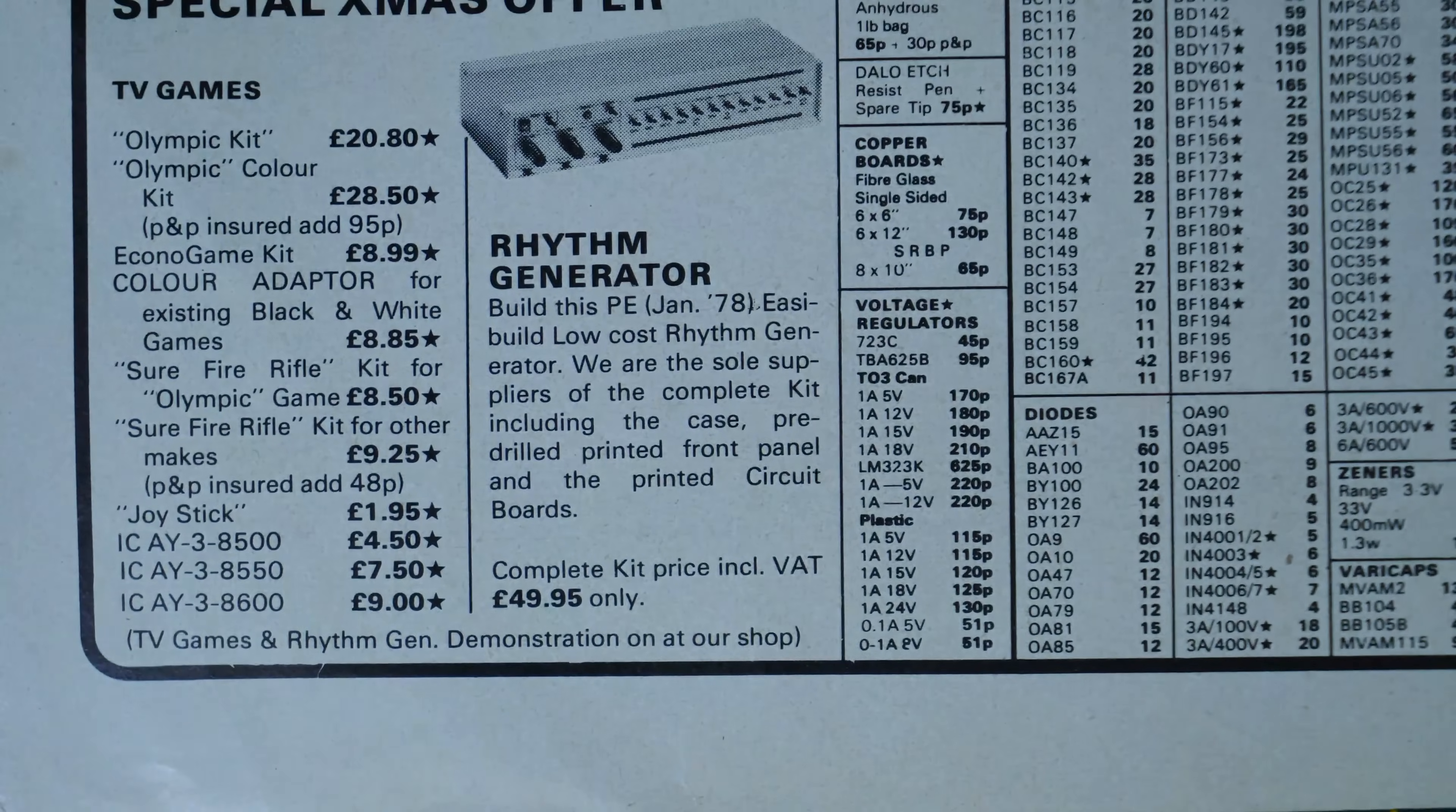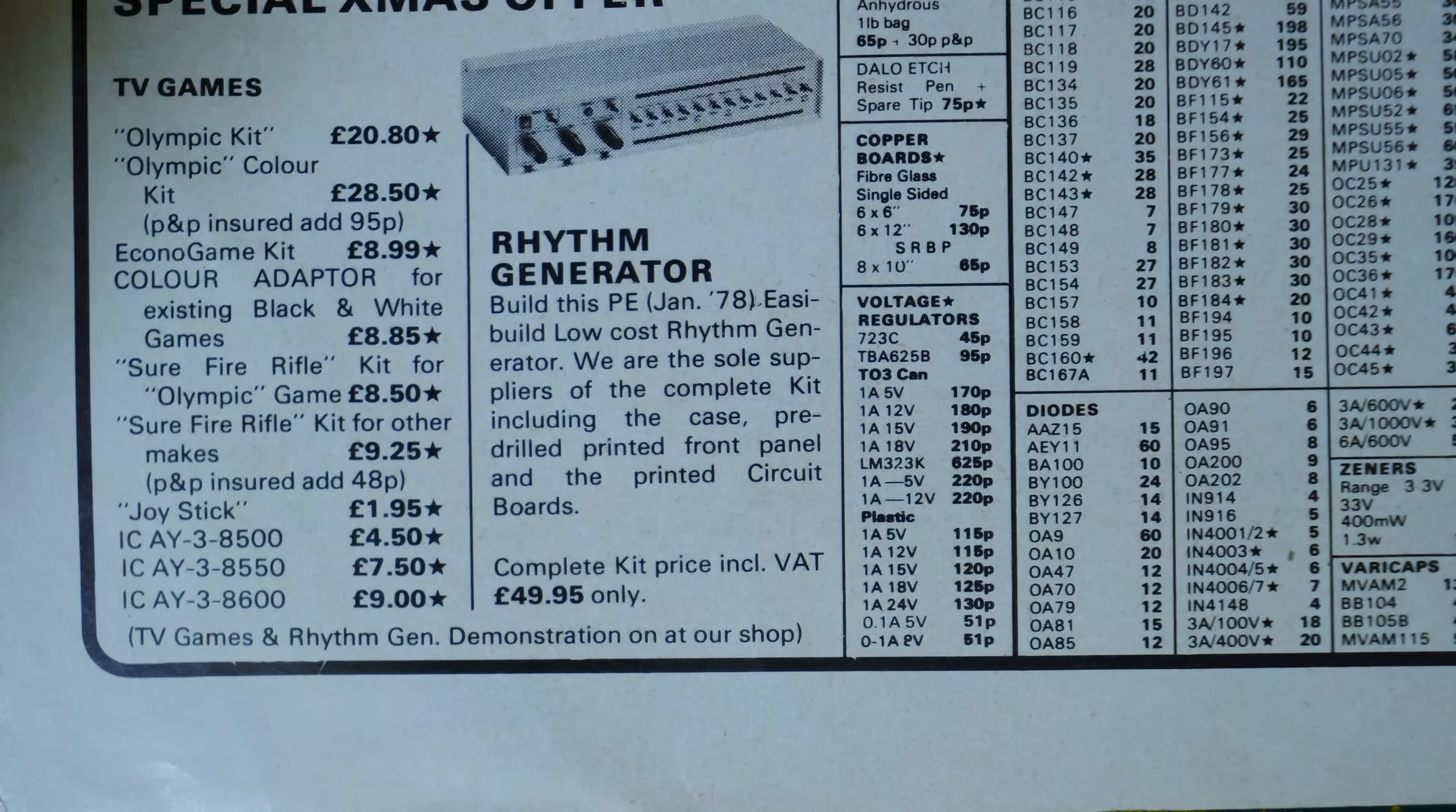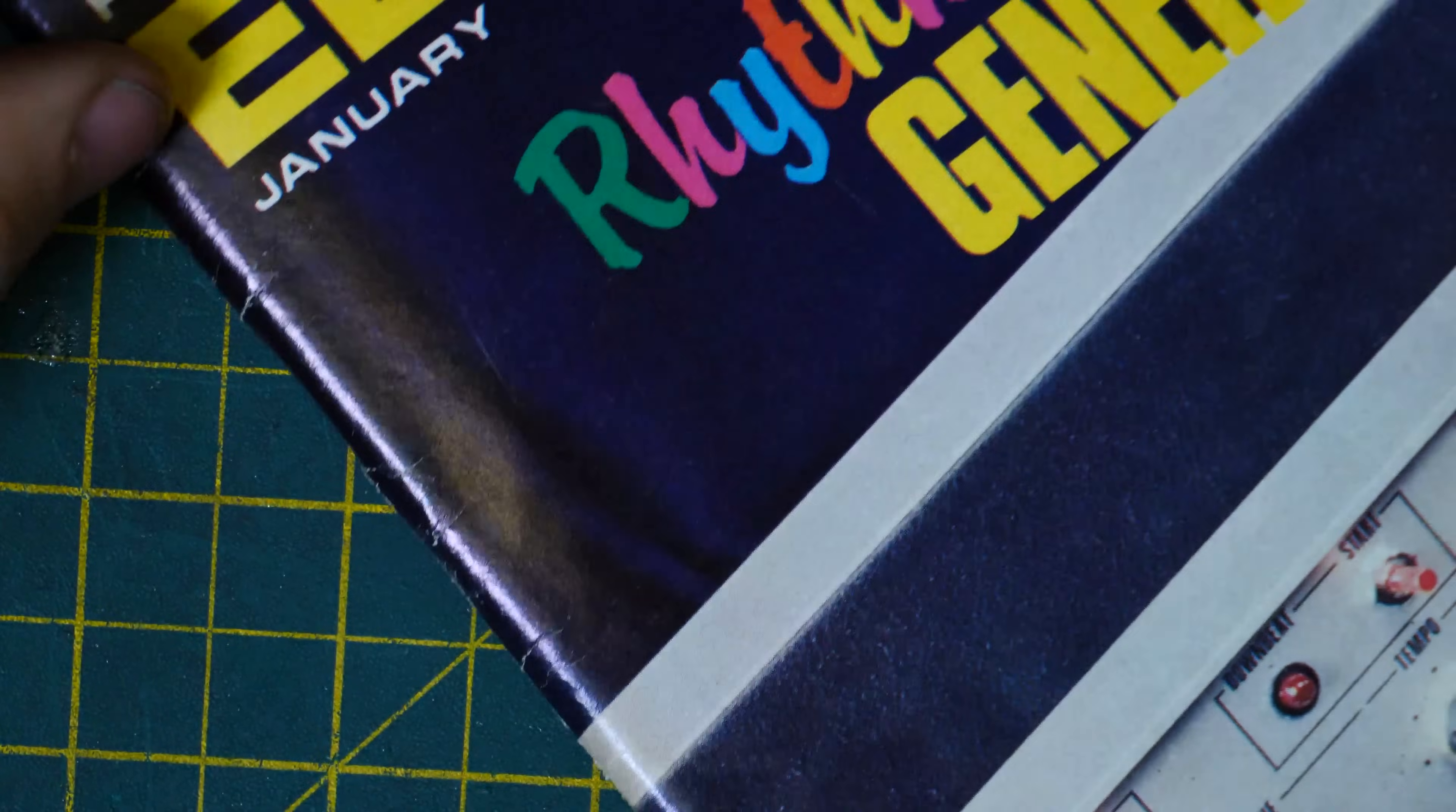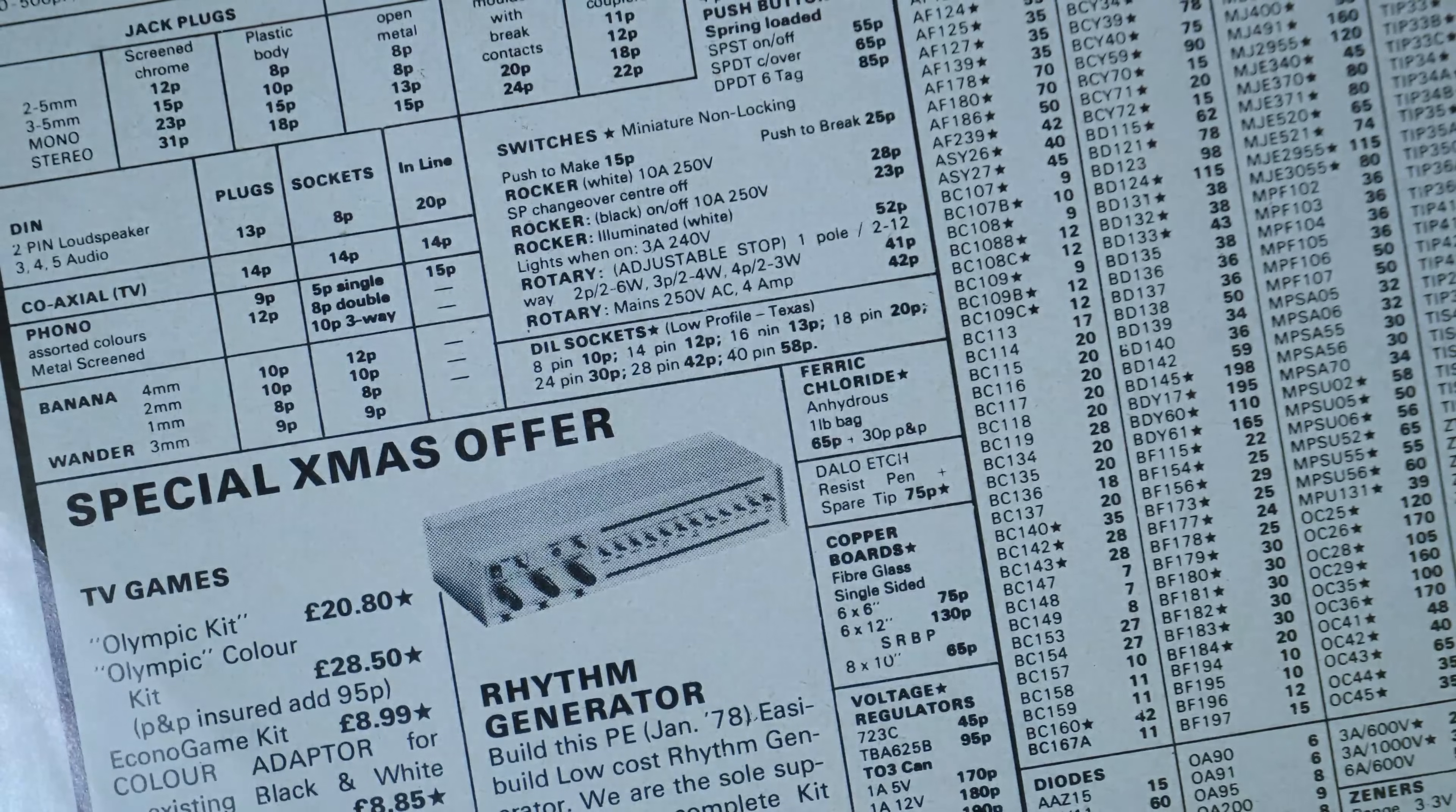You could buy a kit of the Rhythm Generator that is on the front. So it looks like it's got the full kit. Build this, Practical Electronics, January 1978. Easy build, low-cost Rhythm Generator. It looks a bit different. Oh, no, it's just a different enclosure. If you look, this enclosure's got like a Tolex top or something. This one's just got a metal top.